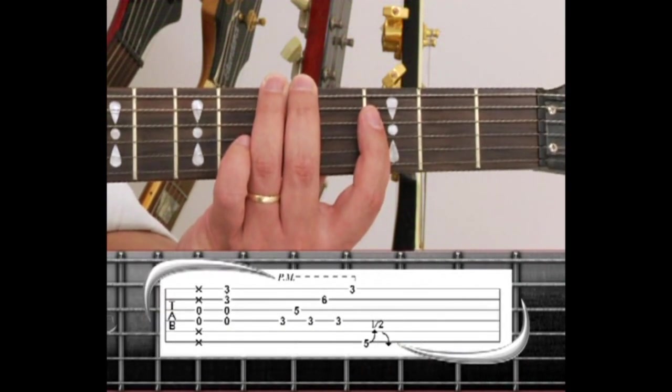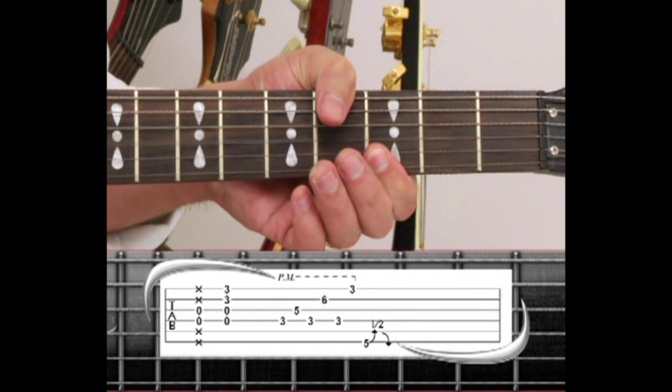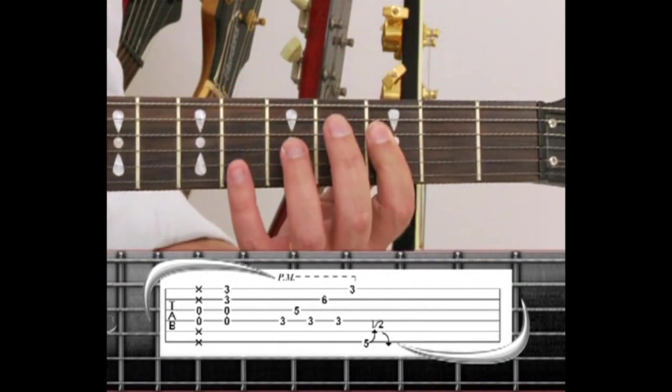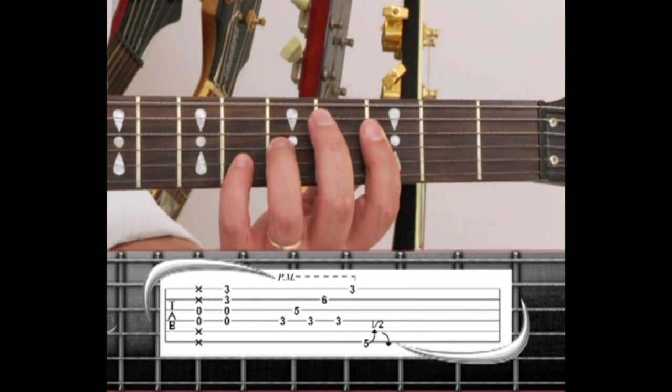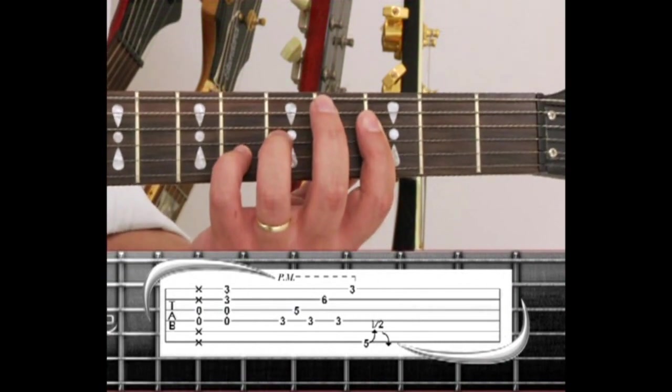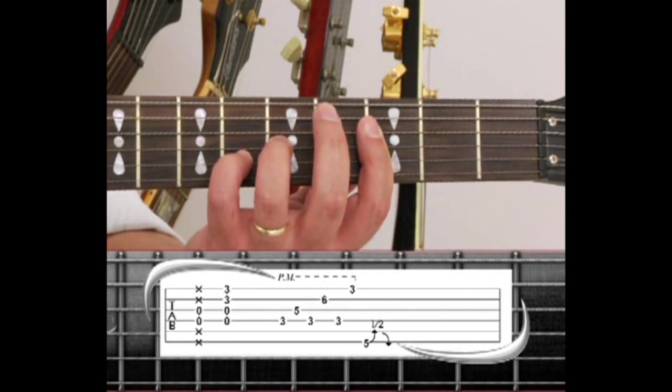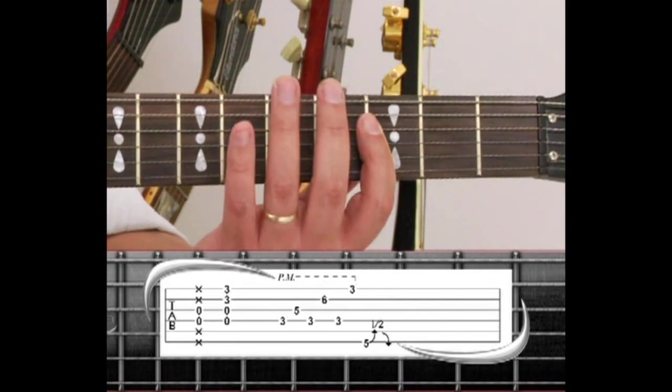Next, repeat the G chords, then repeat the Fsus2 riff. Holding the chord, pick strings 4, 3, 4, 2, 4, 1, then to the 6th string 5th fret, bend and release.